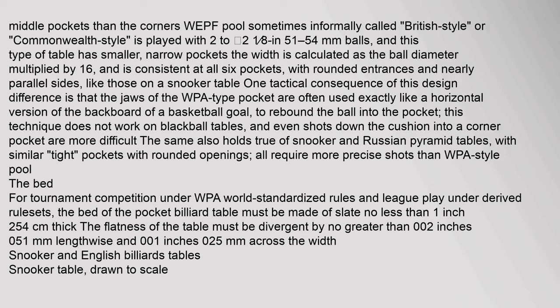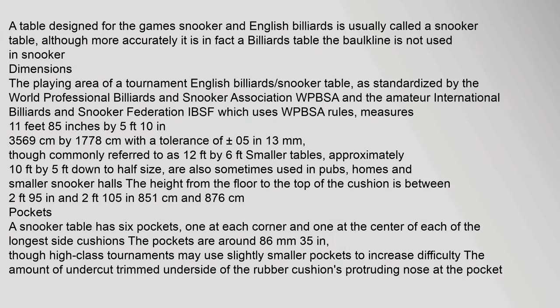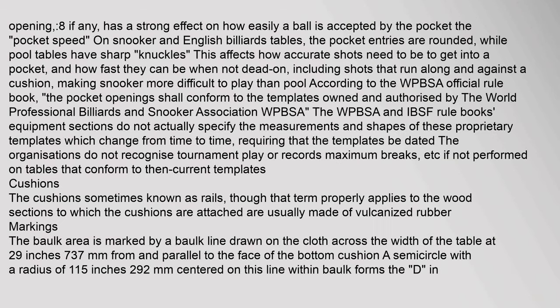A table designed for snooker and English billiards is usually called a snooker table, though more accurately it is a billiards table. The baulk line is not used in snooker. The playing area of a tournament English billiards and snooker table, as standardized by the World Professional Billiards and Snooker Association (WPBSA) and the Amateur International Billiards and Snooker Federation (IBSF), measures specific dimensions. The pocket opening, if any, has a strong effect on how easily a ball is accepted by the pocket — the pocket speed.